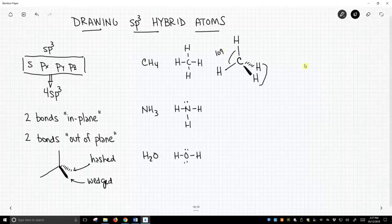We don't have to draw everything in exactly this orientation. We could draw this upside down as long as we have two lines within the plane of the writing surface at about 120 degree bond angle and then we have one wedged and one hashed and there's our tetrahedral methane.